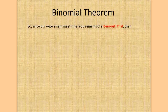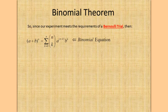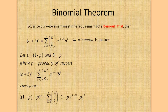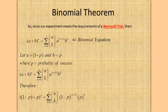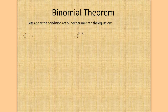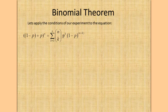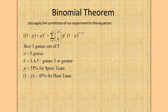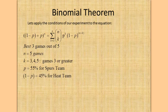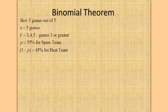Since our experiment meets the requirements of a Bernoulli trial, the Binomial Theorem can be applied. Let a equal 1 minus p and b equal p, where p equals the probability of success. We plug in a equals 1 minus p and b equals p to develop our experimental equation. For best 3 out of 5 games, n equals 5, k equals 3, 4, and 5 — games 3 or greater. p equals 55% for the Spurs' team, and 1 minus p equals 45% for the Heat.